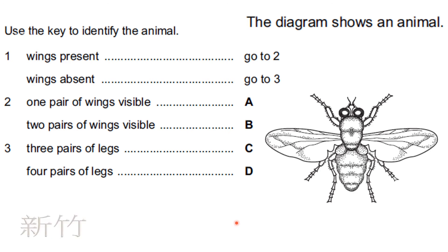The diagram shows an animal — use the key to identify it. Looking at this animal, wings are present, so we go to question two. The trait is one pair of wings visible or two pairs of wings. Pair means two — there are two pairs of wings available. So the answer is going to be A.